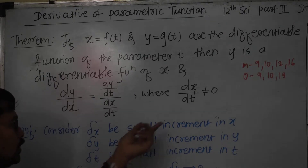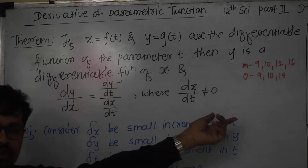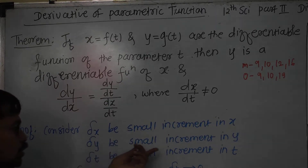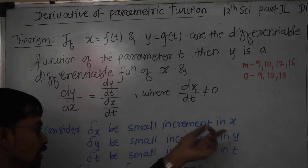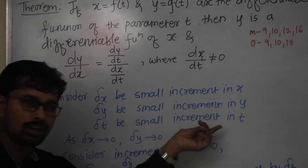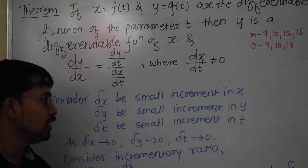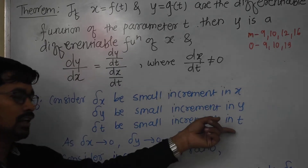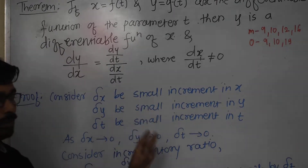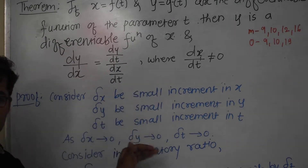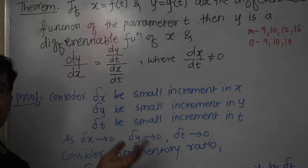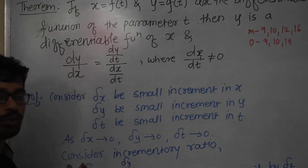We begin by considering: let delta x be a small increment in x, delta y be a small increment in y, and delta t be a small increment in t. You must write down all of these things first, because we are considering the increment ratio.